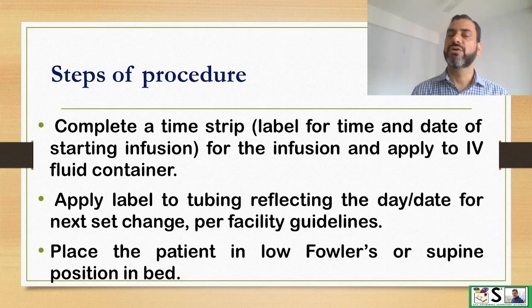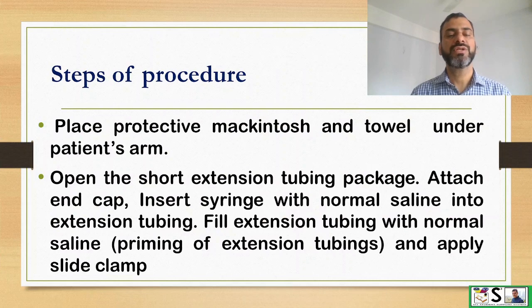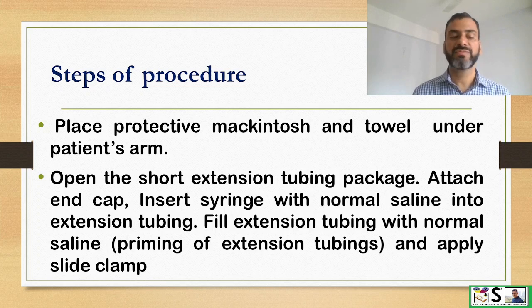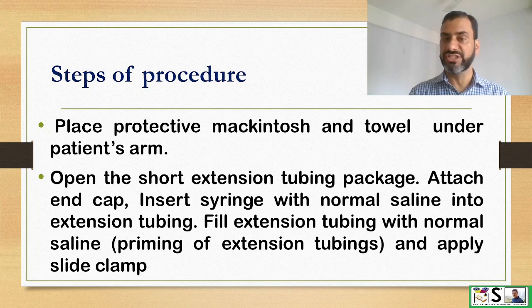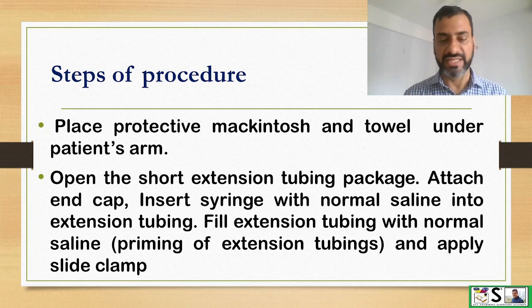Place the client in a low Fowler's or supine position in the bed. Place a protective MacIntosh and towel under the patient's arm. Open the short extension tubing package, attach the end caps, insert normal saline with a syringe, and prime it so that air is removed and the extension tubing is filled with normal saline.